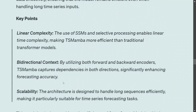Key points about TS Mamba: it achieves linear time complexity, as the use of SSMs and selective processing replaces the quadratic complexity of transformers. By using both forward and backward encoders, TS Mamba captures dependencies from both directions, enabling better predictions and scalability.